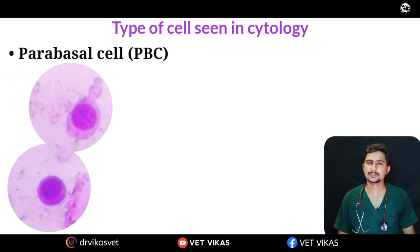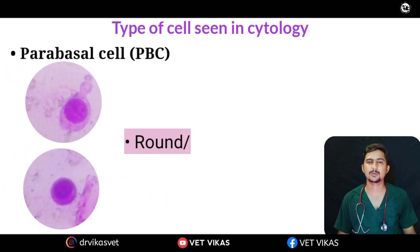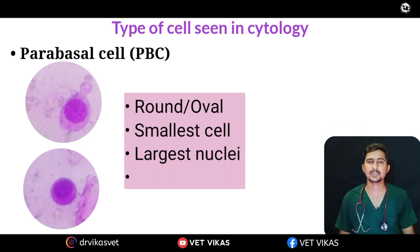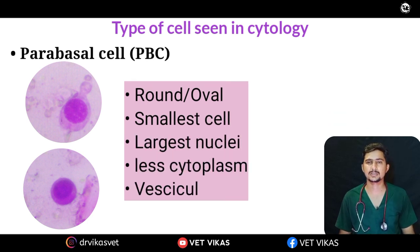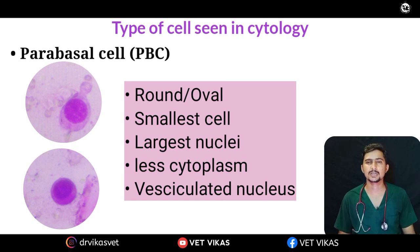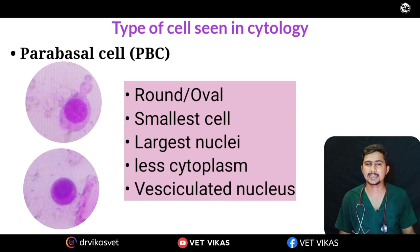First we will talk about parabasal cells. These parabasal cells are the smallest cell among the other cells and they are having the largest nucleus. There will be very less cytoplasmic volume in case of the parabasal cell and the shape of the cell will be round or oval. So parabasal cell will be round or oval, the nucleus will be large, cytoplasm will be very less, and the nucleus is vesiculated in case of parabasal cell.